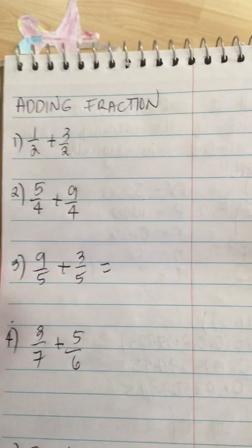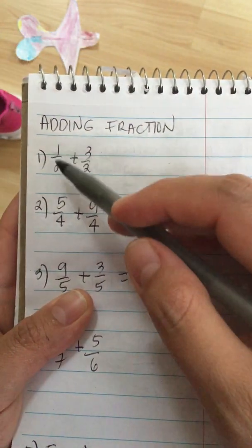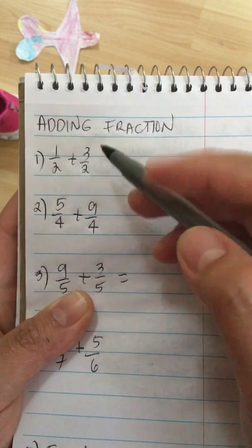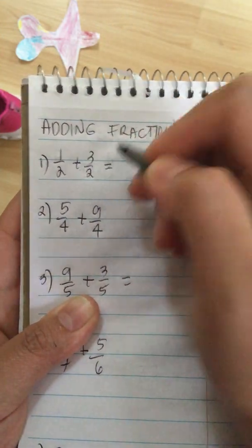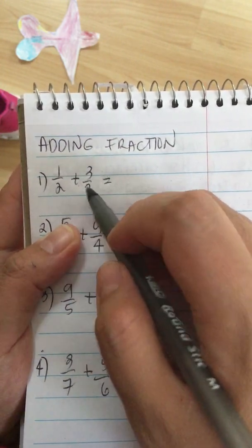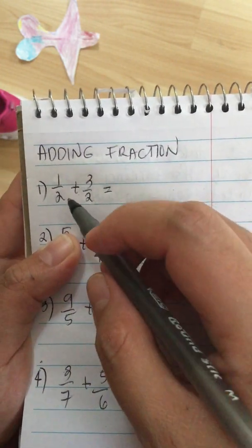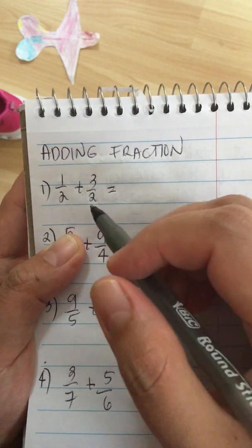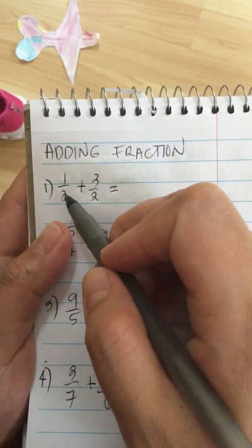So we add fractions. When you add fractions, you add the numerator only and the denominator stays the same, but they must have the same denominator. For example, this one has the same denominator, so you can add the numerator right away.